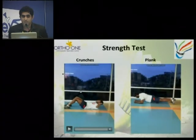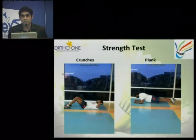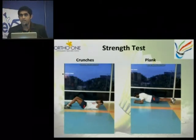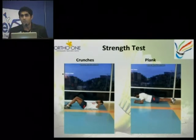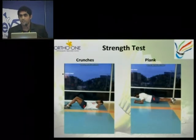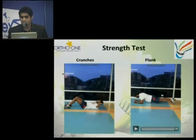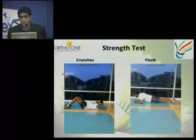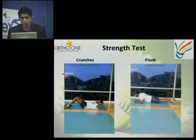Next comes the strength test. For strength, we do crunches, push-ups, and squats. Every player tends to do only crunches after the game and works out only for the abdomen rather than the whole body. We need to work out and strengthen the whole body. The plank, also known as the Iron Man position, requires you to hold the same position for a set time, which tests your core strength and core stability.